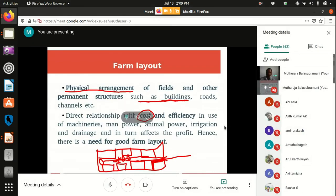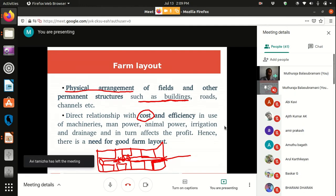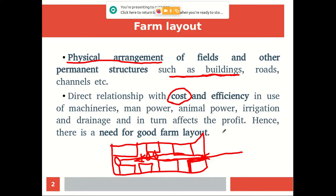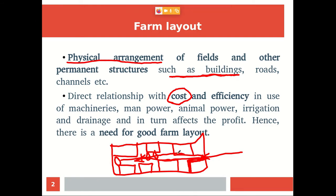Farm layout affects the use of machineries, manpower, animal power, irrigation, and drainage, and in turn affects the profit. We have to make sure it is the most efficient arrangement. For example, when we have agriculture producers, we can have storage houses near them. When we have horticulture producers, we can have cooling storage units nearby. We have to plan and establish the farm accordingly — that is the farm layout.